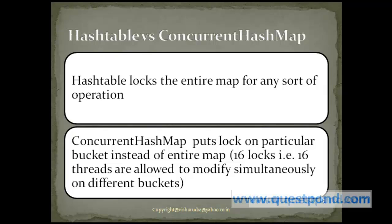We know hashtable, which was introduced in the earlier versions of Java, was synchronized in nature. Concurrent hashmap also provides synchronization on the map. The difference lies in the fact that all operations defined within hashtable perform a lock on the entire map, while in the case of concurrent hashmap, instead of locking the entire map, it locks individual buckets. Data is stored within the map in the form of buckets, where all objects with the same hash code are put inside one bucket. In concurrent hashmap, the locking happens at the bucket level.